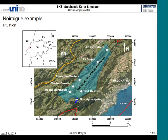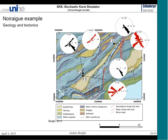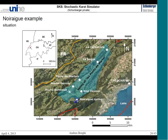Now let's speak about the Noireg example, the main 3D illustration of the concept. The Noireg spring is a classic spring near Neuchâtel city in Switzerland, with a catchment of about 70 square kilometers. The geology is quite complex because we are in the Jura Mountains. The spring is located here, and within the catchment there are two major thrusts — a normal thrust and a back thrust on the other side of the valley. All infiltration water from this region feeds the karstic aquifer and emerges at the Noireg spring.